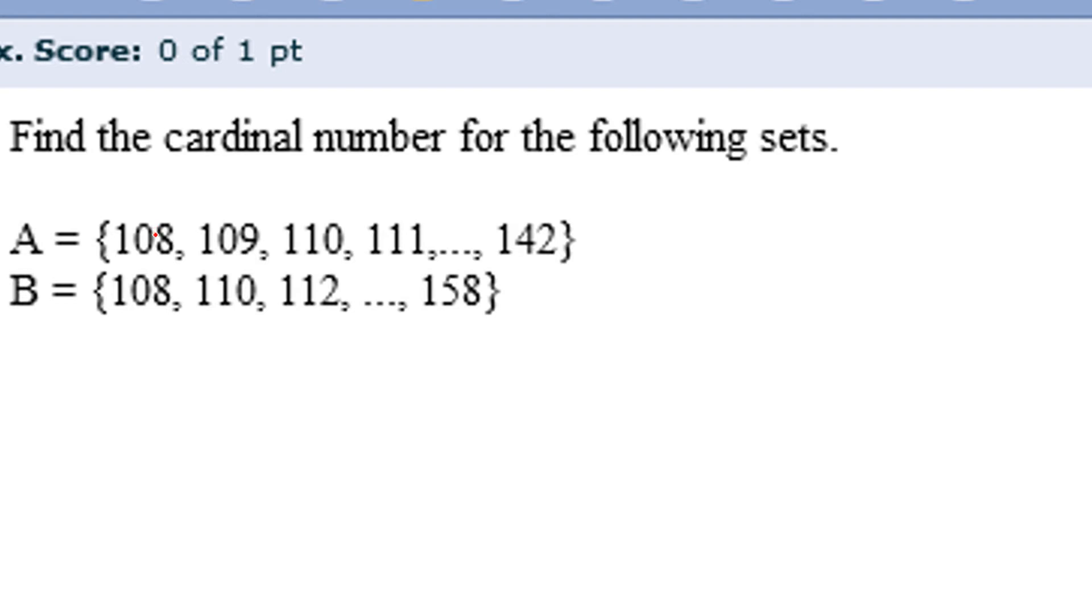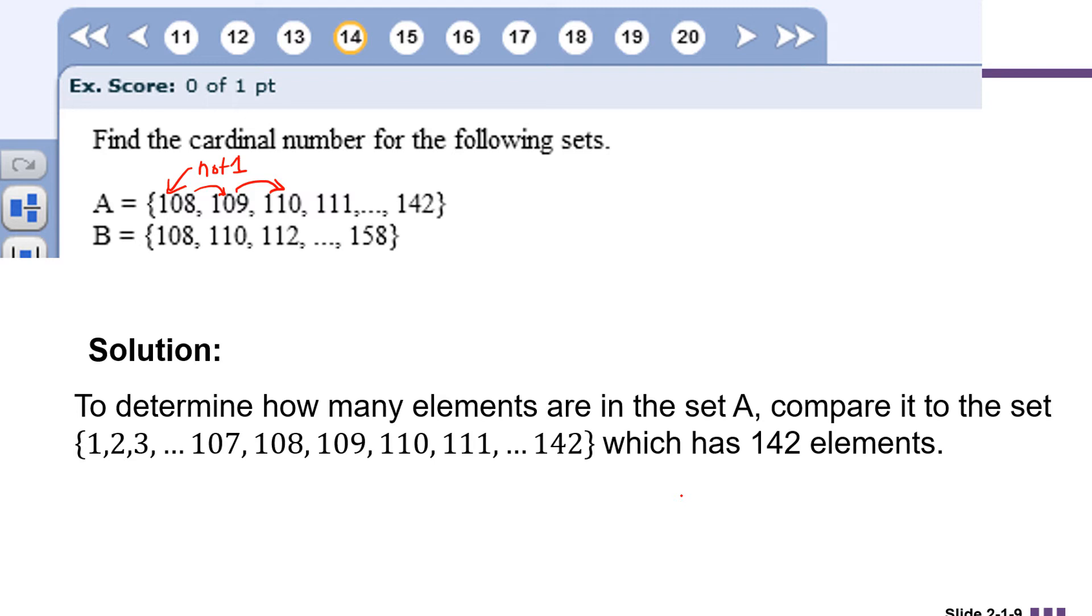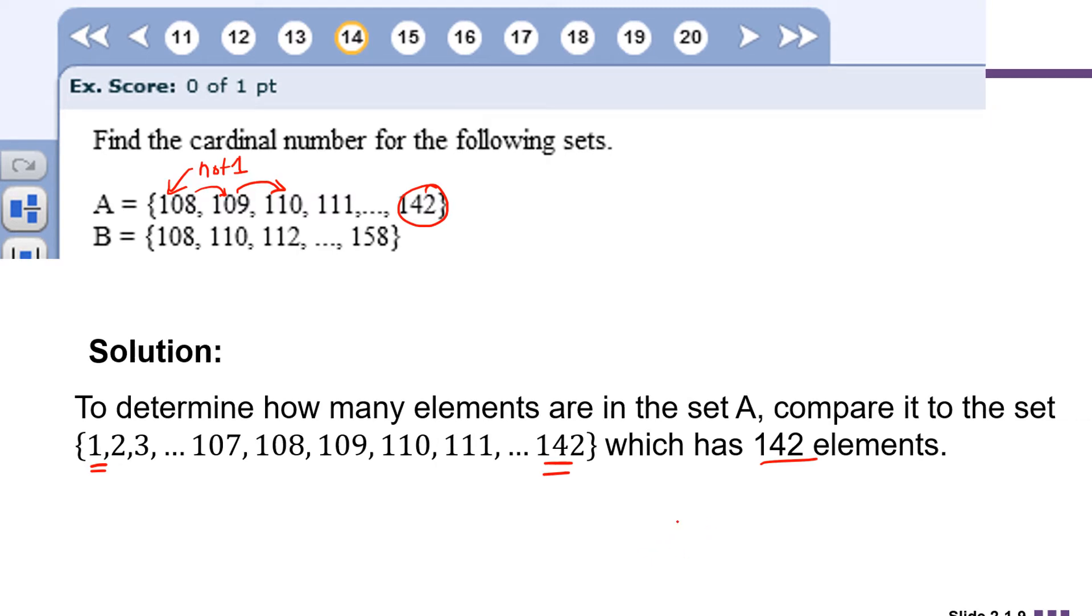In order to determine the cardinal number of any set or the number of elements in any set that doesn't start with one, but increases by one each time, you're going to do the same procedure. First, you're going to compare set A to the set that starts at one, but ends with the same largest number that A has. This is easy to determine the number of elements in the set that goes from one to 142. There's going to be 142 elements. So how is A different from that set?